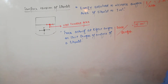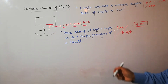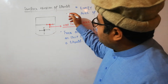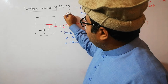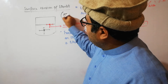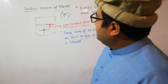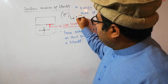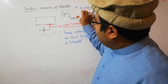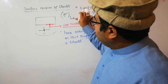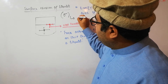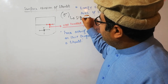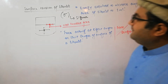Now, what is the symbol of surface tension? Surface tension is usually represented by the symbol sigma (σ).